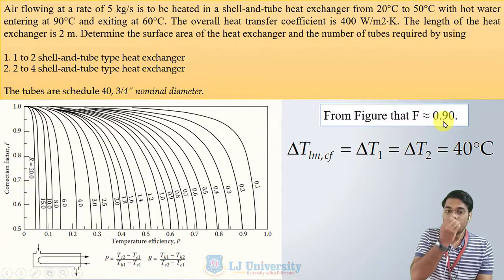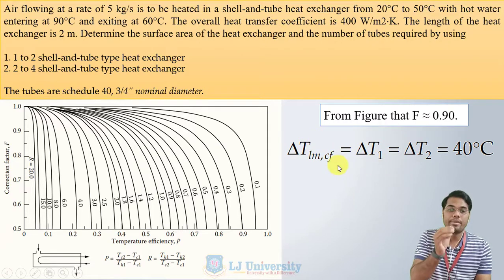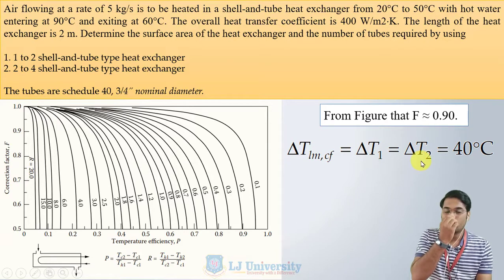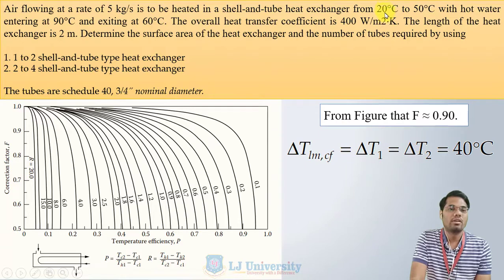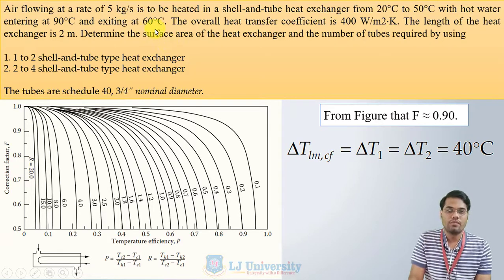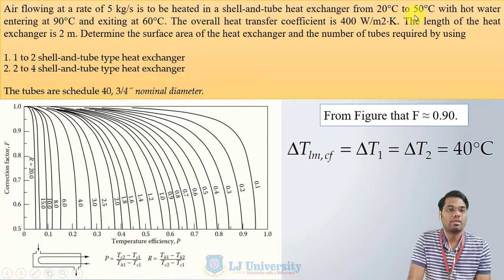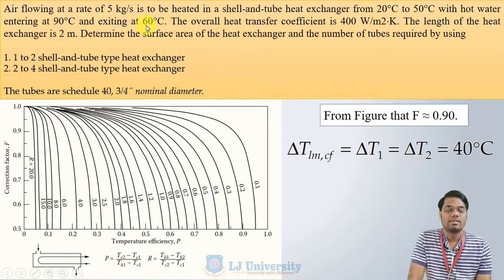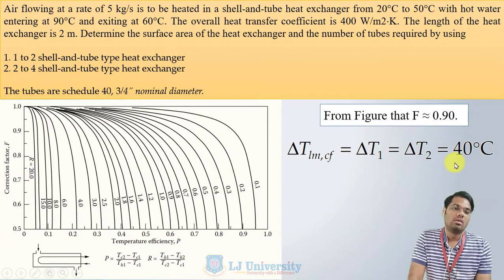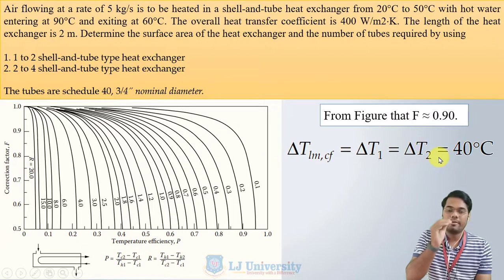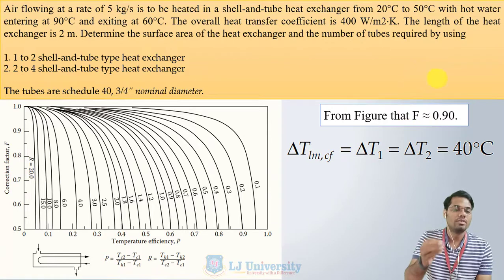This is a special case where the LMTD equals either ΔT1 or ΔT2. Here TC1 = 20°C, TC2 = 50°C, TH1 = 90°C, TH2 = 60°C. ΔT1 = TH1 − TC2 = 90 − 50 = 40°C, and ΔT2 = TH2 − TC1 = 60 − 20 = 40°C. Since ΔT1 = ΔT2, the LMTD for the counter-flow arrangement equals 40°C directly.